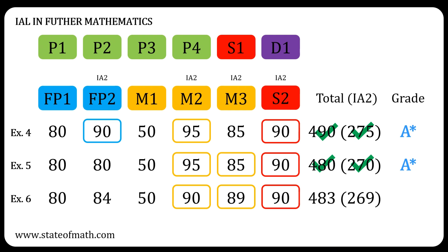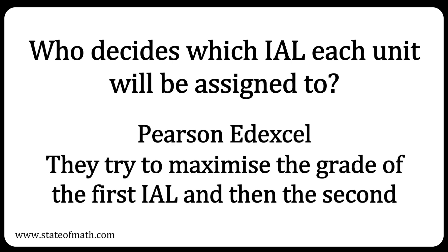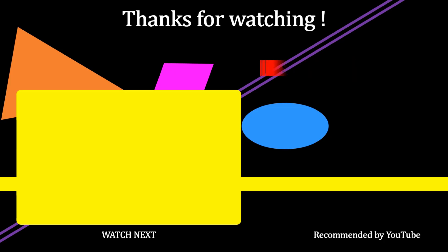In example six, the total UMS is 483, but the total of the best three IA2 units is below 270, so the grade awarded is an A. A common question we get asked is: who decides which IAL each unit will be assigned to? The answer is Pearson Edexcel. They try to maximize the grade of the first IAL — that is the IAL in mathematics — and then the second one, which is the IAL in further mathematics. Thanks for watching. If you found the video useful, please like and subscribe.